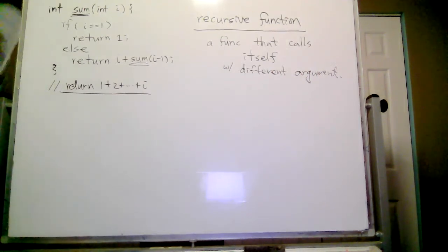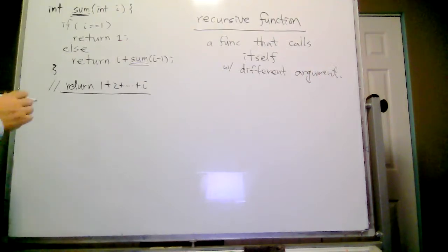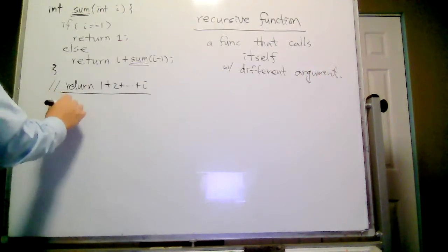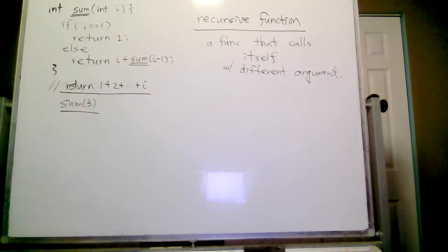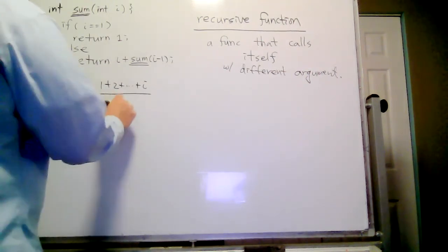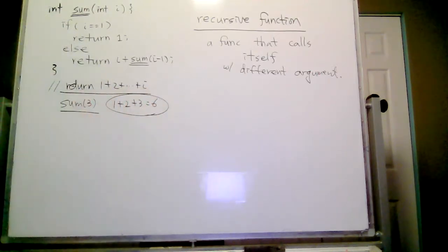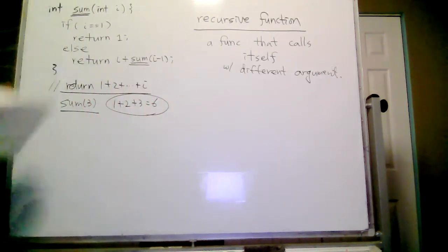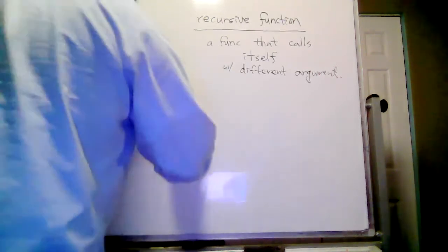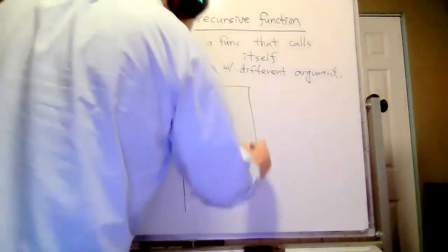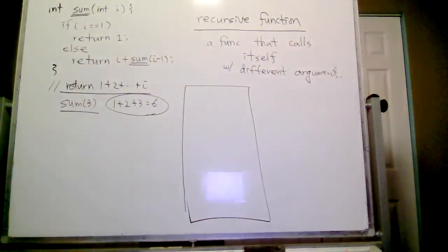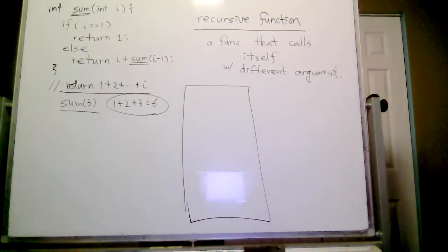So let's think about this function and let's say sum(3). Sum(3) should output one plus two plus three, which is six. So let's think about how this works. Let's think about the call stack again. If you're not familiar with call stacks, please watch the video about call stacks before watching this video.